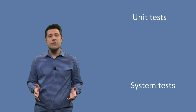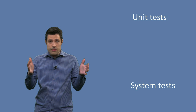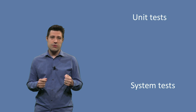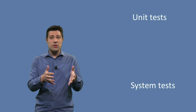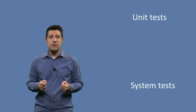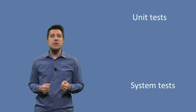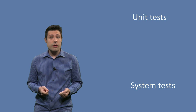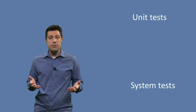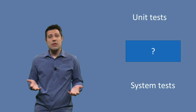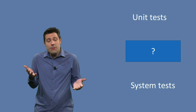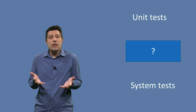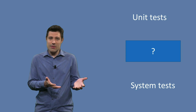In the previous video, we discussed the two extremes of a test level. The first one was unit tests, meaning we were testing one unit isolated from the rest. And the other extreme was system tests, or black box tests, where we were testing the whole system together. But the question is, is there something in between? Is there a case that I need more than unit tests and less than system tests?